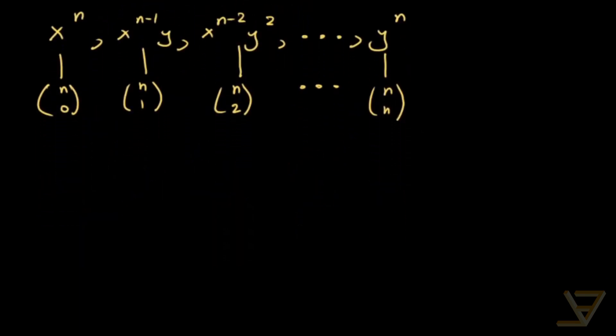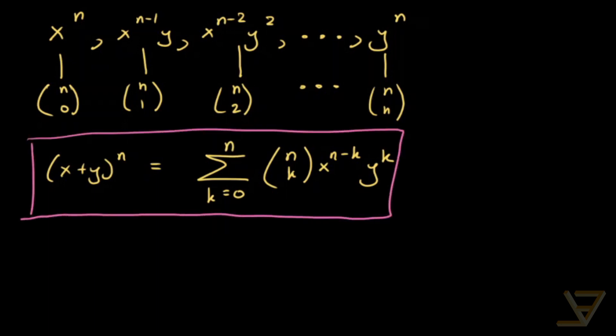So that means the binomial expansion is simply x plus y to the power of n, which is equal to the sum of n choose k times x to the power of n minus k times y to the power of k, where k goes from 0 through n. That is what is called the binomial theorem or the expansion theorem for binomial expressions.